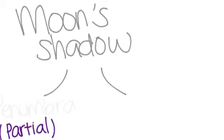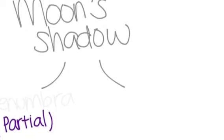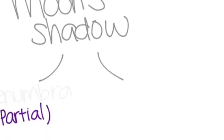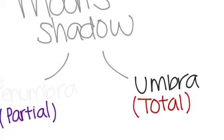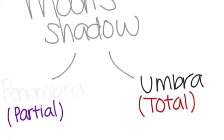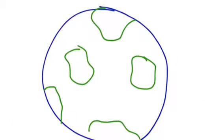The moon's shadow has two parts: the penumbra, which is the faint outer shadow, and partial eclipses are seen from this shadow. It also has the umbra, which is the dark inner shadow, and total eclipses are seen from this shadow. All planets, like Earth, have the same shadows.